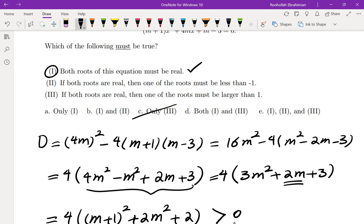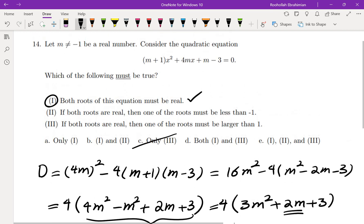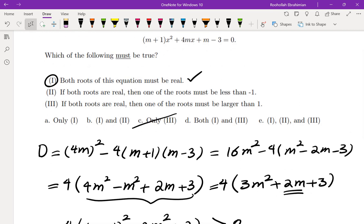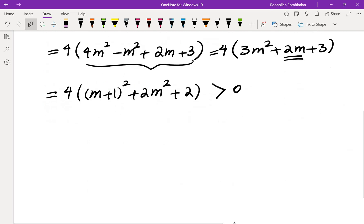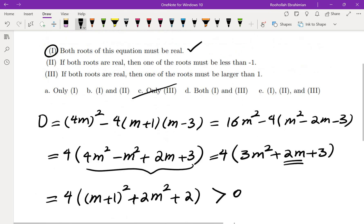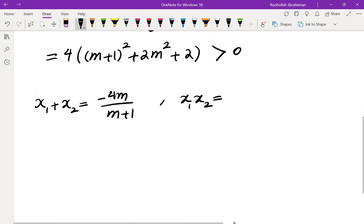Now the second one tells us that if both of the roots are real, which we know they are always real, then one of the roots must be less than negative 1. For that I will start writing down the Vieta's formulas. So Vieta's formulas tells us the sum of the roots is -b/a and the product of the roots is c which is (m-3)/(m+1).